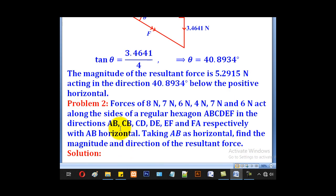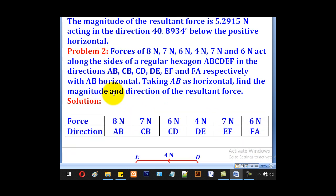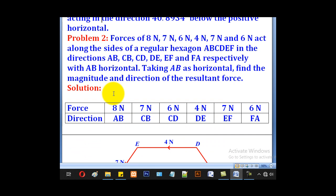So that's how you get the resultant of a force when the forces form a triangle. What if it was a hexagon? So this problem shows a hexagon. Forces of 8, 7, 6, 4, 7, and 6 act along the sides of a regular hexagon.